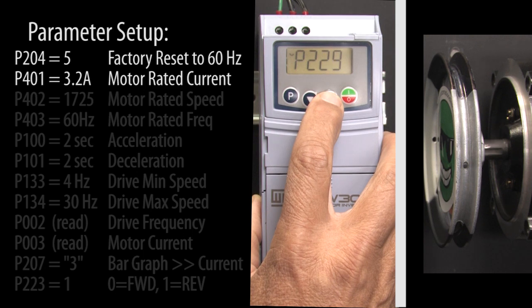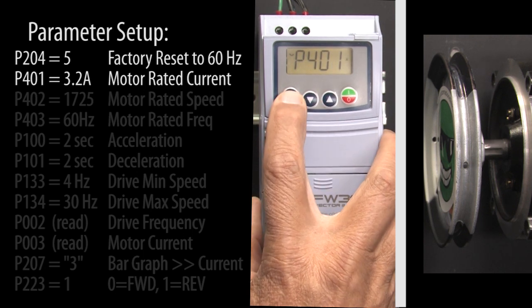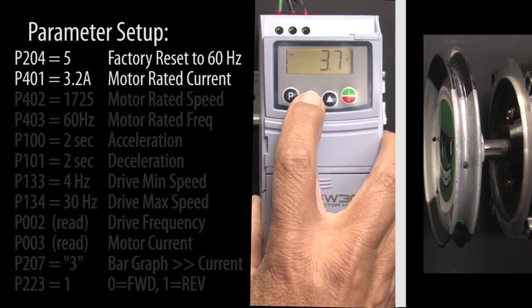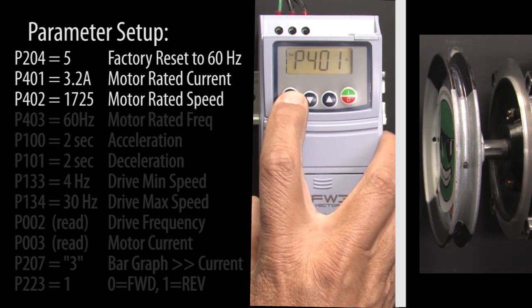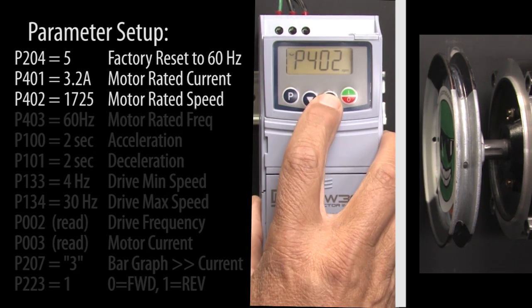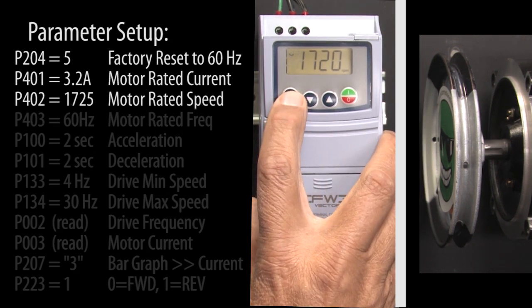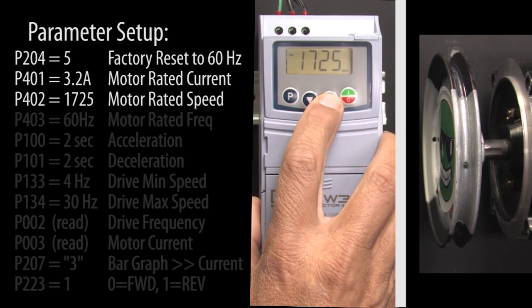Scroll to parameter 401 which is the motor's rated current. Ours is 3.2 Amps so we enter that and press P to accept it. Parameter 402 is the motor's rated speed, we'll modify that to 1725 and hit P to accept that.